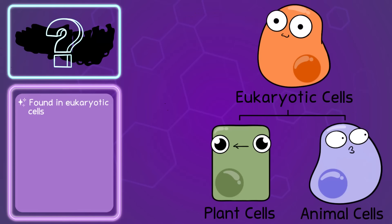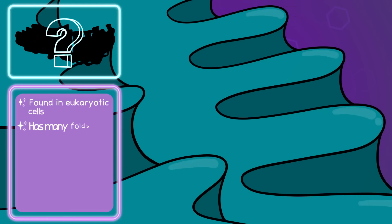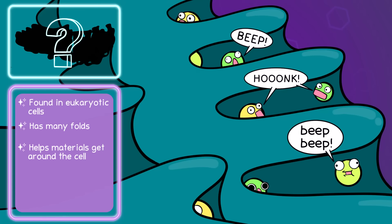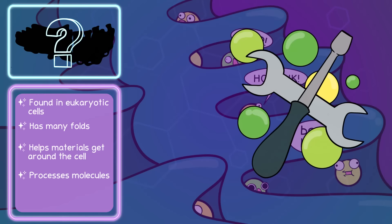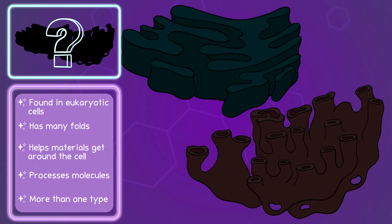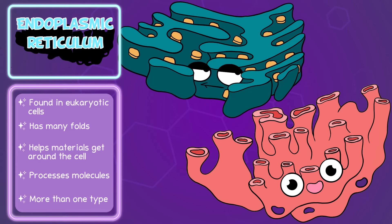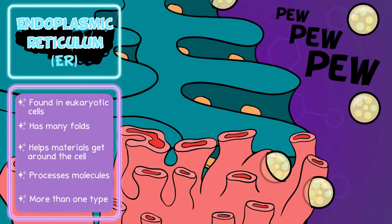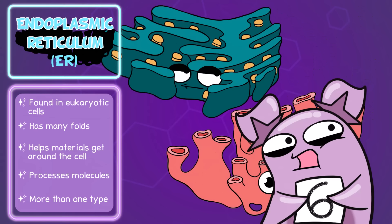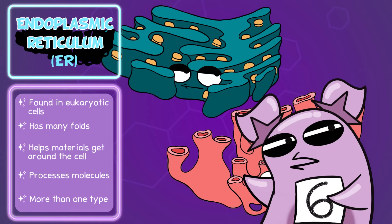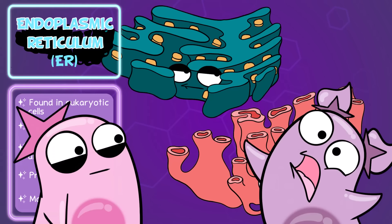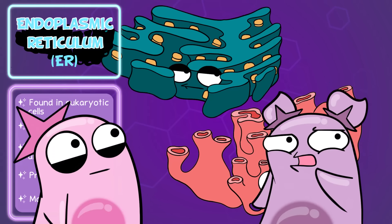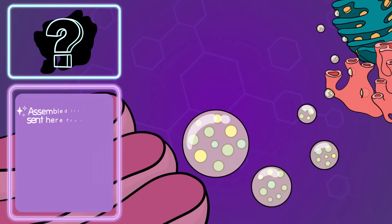This next structure is found in eukaryotic cells, both plant and animal cells. It has many folds, making it like a highway for materials to get around the cell. But it has other important functions, like processing those molecules. There's also more than one type. It's the endoplasmic reticulum, or ER for short. The rough ER has ribosomes that make protein, and the smooth ER makes lipids and is involved in detoxification. They both can ship out items and vesicles to the next structure we'll mention. That's a 6 out of 10. I like organelles with a nickname, but this is a really confusing nickname. It also looks like a labyrinth, which could either be really fun or really scary to get lost in.